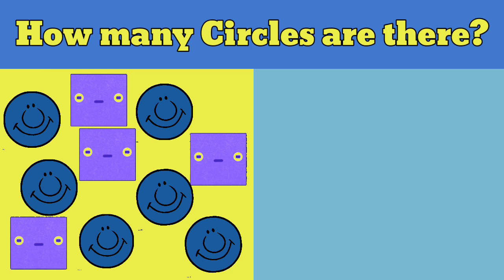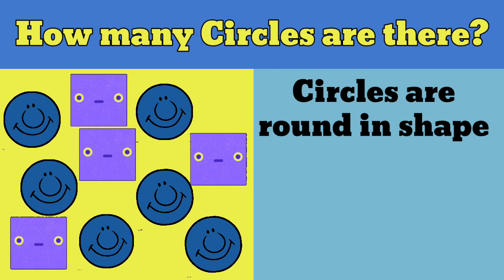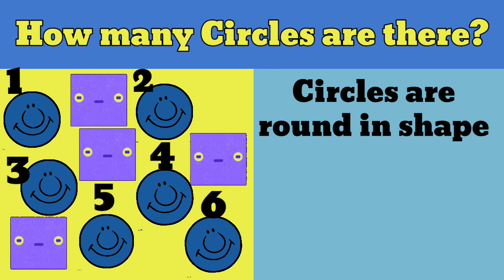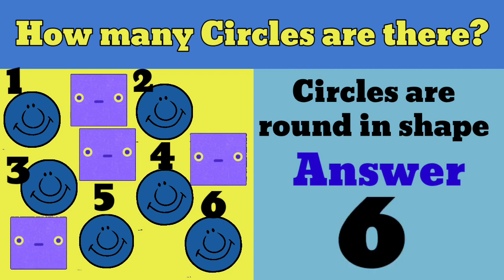How many circles are there? Circles are round in shape. Let's count: 1, 2, 3, 4, 5, 6. There are six circles.